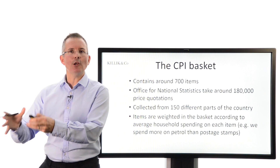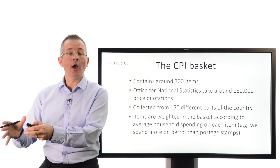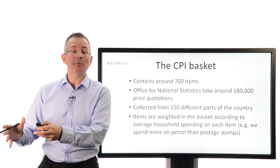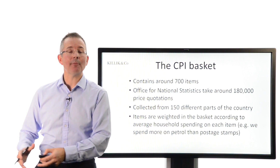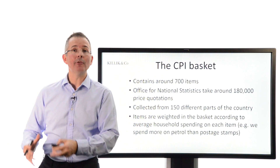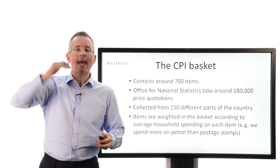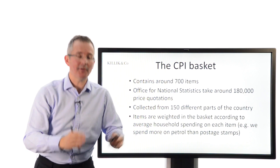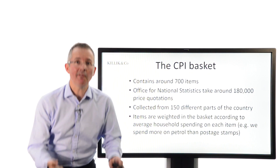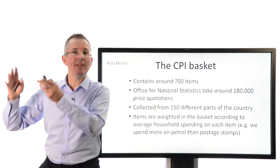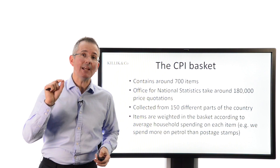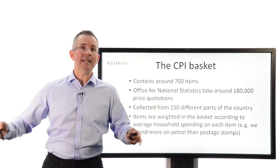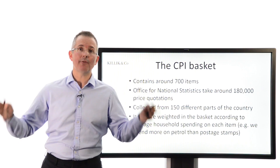Re-measure the value of the items in the basket, taking account of what families tend to spend on each item. A typical family will spend more on fuel for the car than on postage stamps, for example, so you weight the items, come up with an index, and monitor the change in its value up or down. As the value of those 700 items increases — inflation; if it decreases — deflation. You pick representative items, otherwise the basket could be completely meaningless.